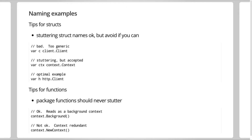There might be examples of doing this not optimally. The first is struct stuttering. Struct stuttering is generally okay in some cases, but the worst case is if you had a package called client and a struct inside it also called client — 200 lines down the code you see client.client and you have no idea which client you're looking at. With context, stuttering is more acceptable because you're probably not going to have more than one concept of a context in your library.